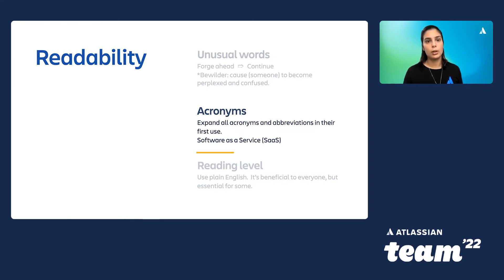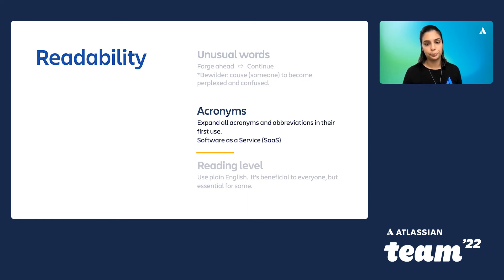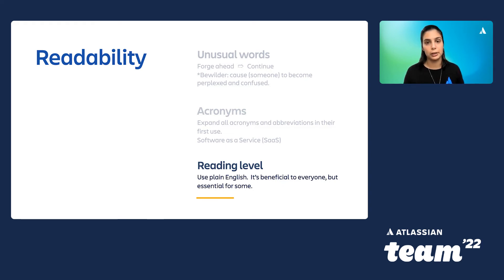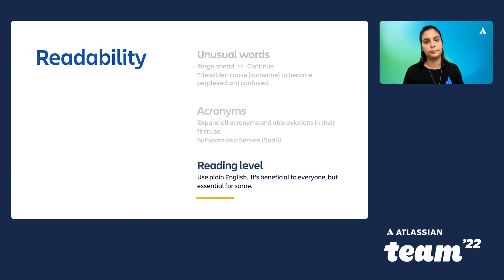Abbreviations and acronyms: while we all know how much a tech company loves a good acronym, they can be extremely inaccessible for people with disabilities or those who speak English as a second language. Make sure every page expands all abbreviations and acronyms on their first use. And thirdly, reading level — plain English is beneficial to all your readers, but it's actually essential for some. It's not baby talk, nor a simplified version of English; it's simply the most concise, straightforward way of getting your message across. Newspapers like the New York Times write to a 10th grade reading level, and the Australian government targets an 8th grade level. At Atlassian, sometimes we go even younger.